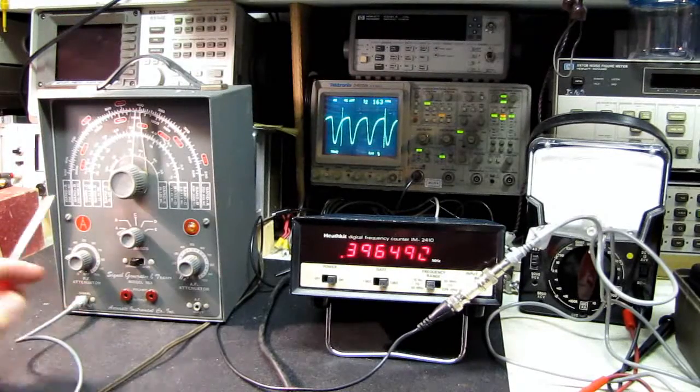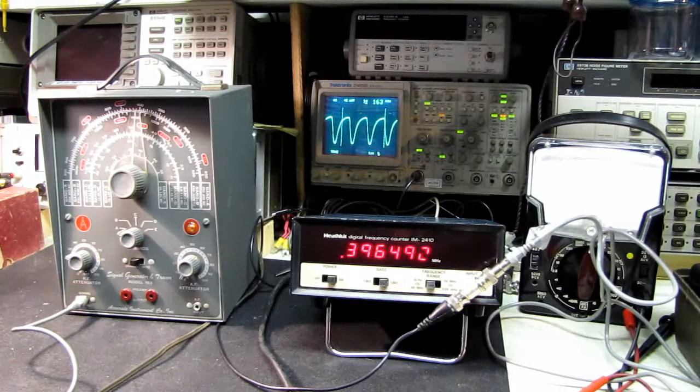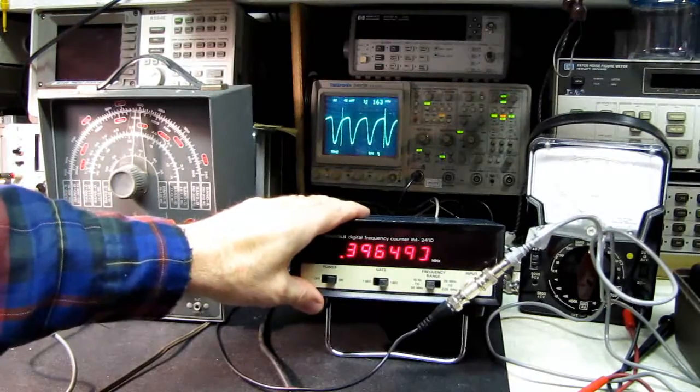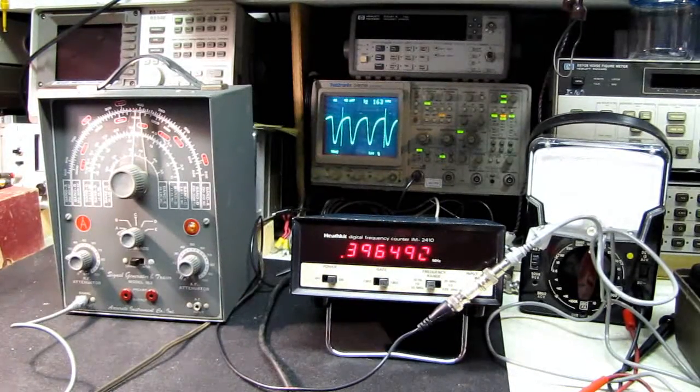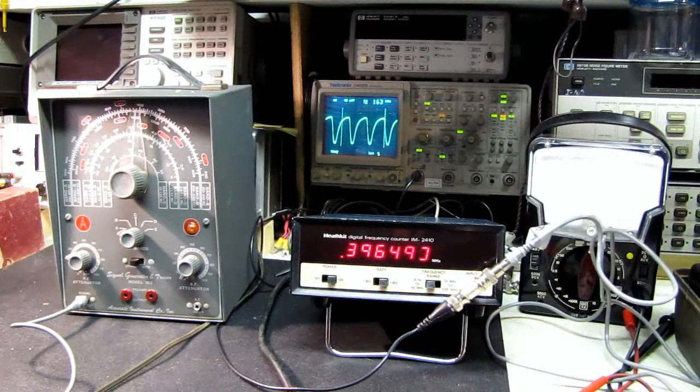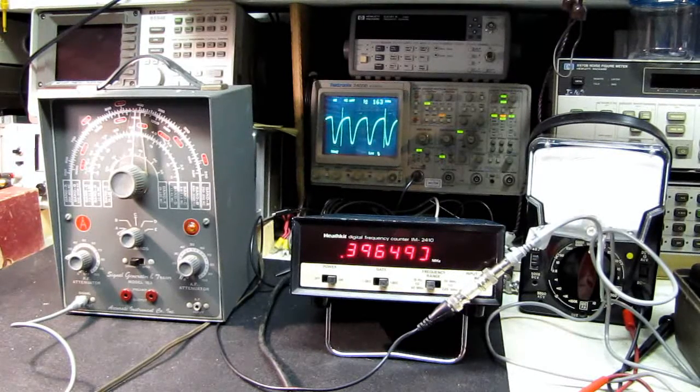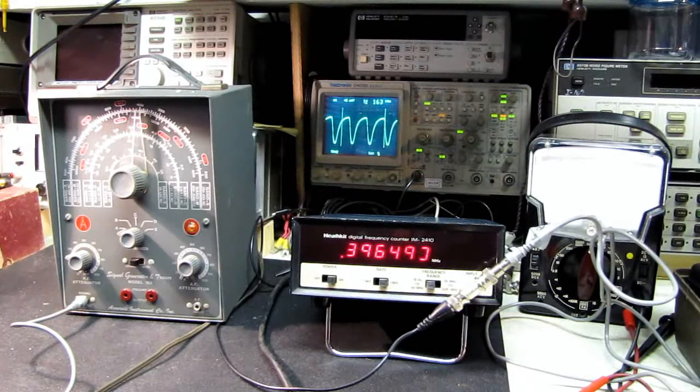At any rate, we've more or less finished repairing our old Accurate Instruments signal generator slash signal tracer, and tonight we're going to check it out using our Heathkit frequency counter and take a look at the signal trace on the oscilloscope back there.